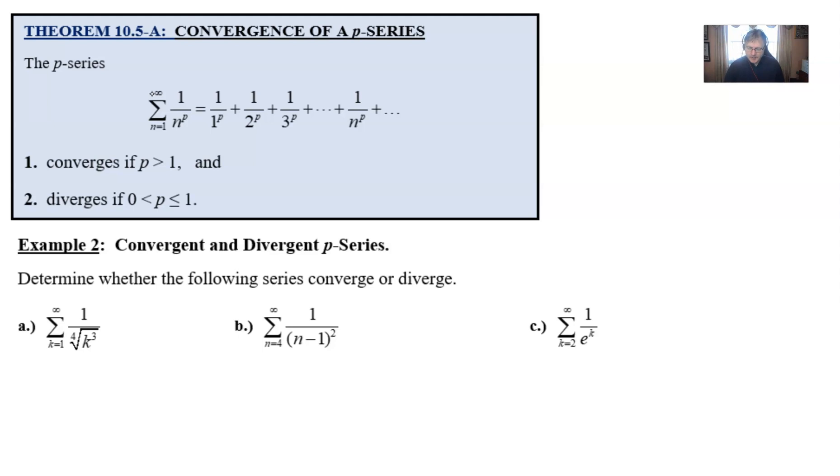Theorem 10.5A, convergence of a p-series, says if you've got your p-series, the summation as n goes from one to infinity of one over n to the p, that's going to produce one over one to the p plus one over two to the p, etc. It's going to do one of two things.